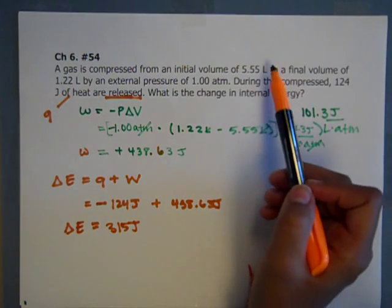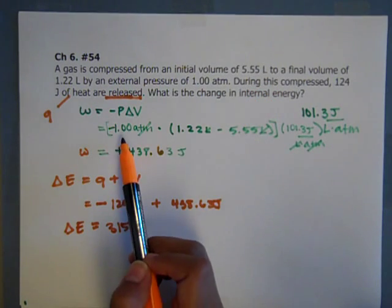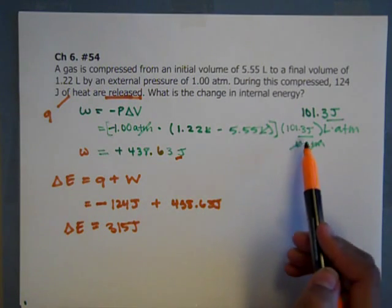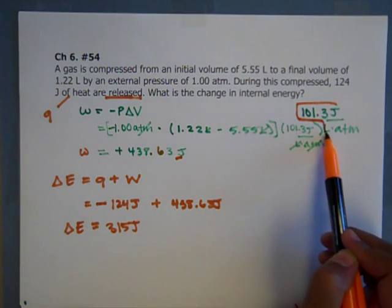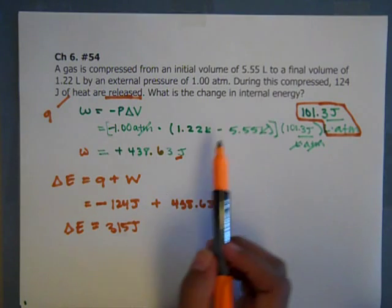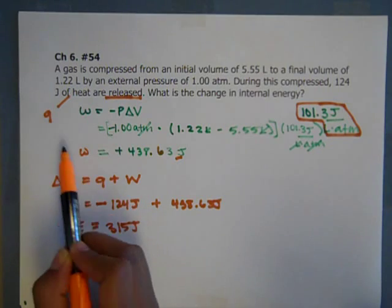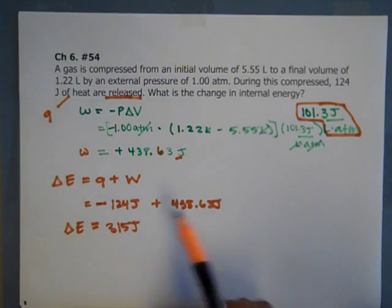So once again, V final minus V initial times pressure to get our work, convert that over to joules using this conversion factor. And then plug into the delta E formula, which is going to be Q plus work. So Q and work, which we have both of them after that.